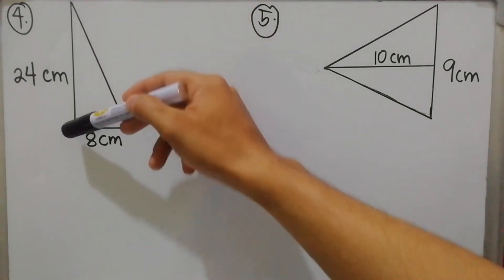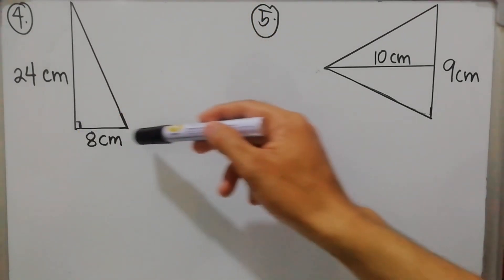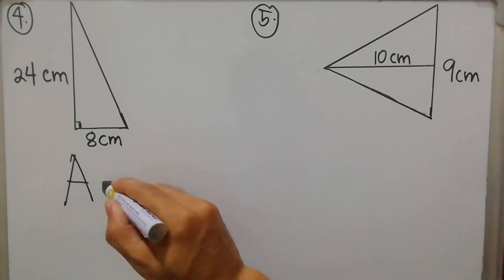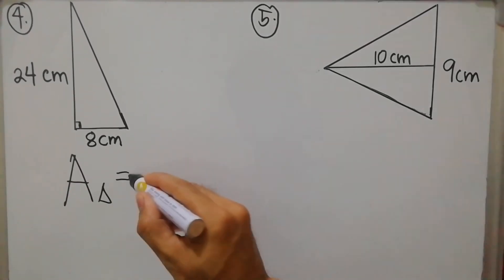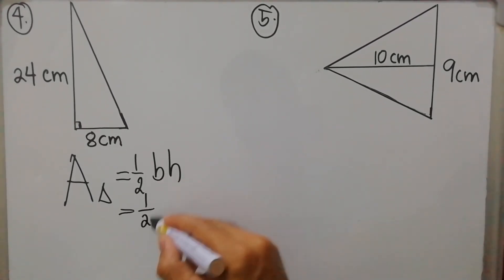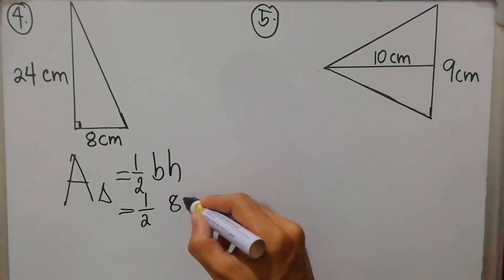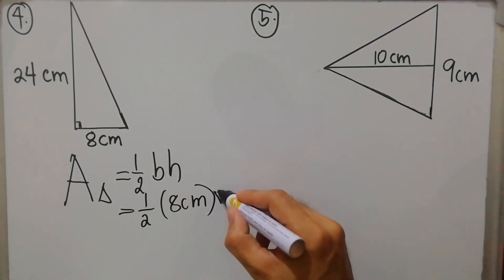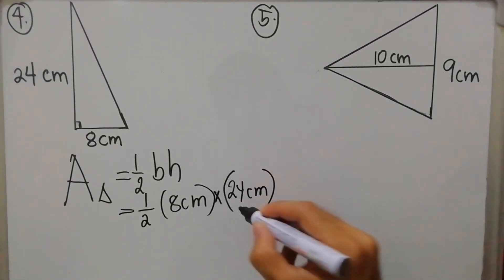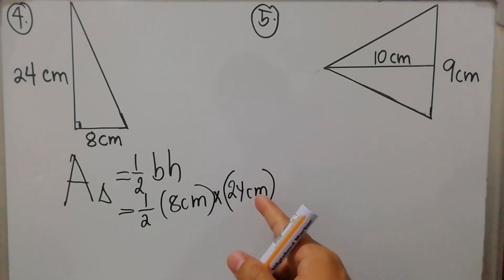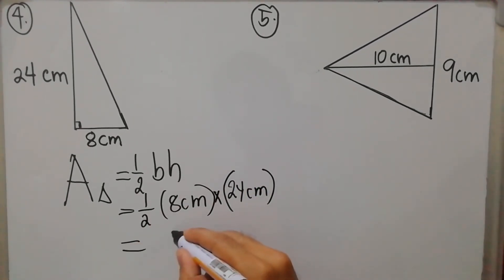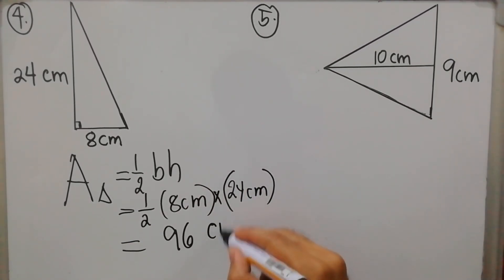For item number four, we have a right triangle with a height of 24 centimeters and a base of 8 centimeters. Area of triangle = one half × base × height. Substituting: one half × 8 cm × 24 cm. Dividing first: 8 ÷ 2 = 4, then 4 × 24 = 96 square centimeters.